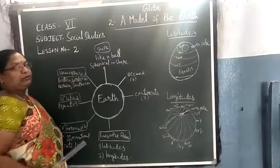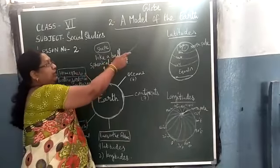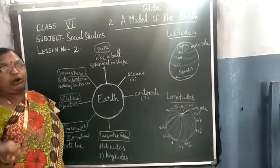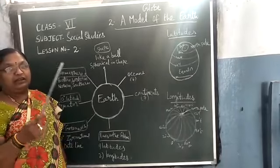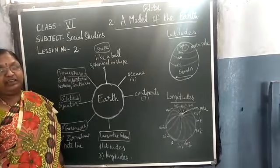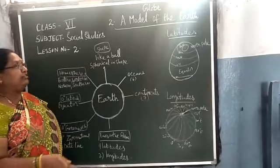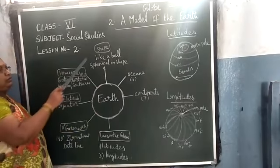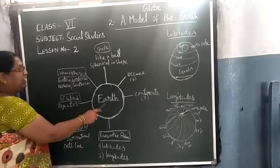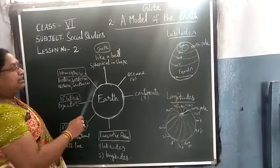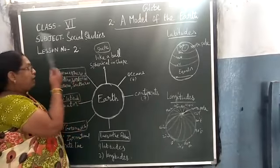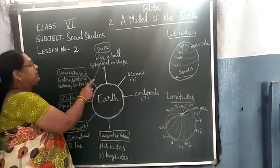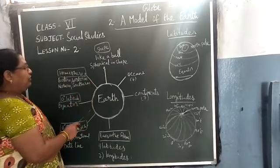In 6th standard social studies we start with the model of the earth — the globe. You all know how it is a globe. In the globe you can see many continents, oceans, water bodies, states, and everything. So how model of the earth means, first we have to know about the earth. The earth is in a spherical shape.